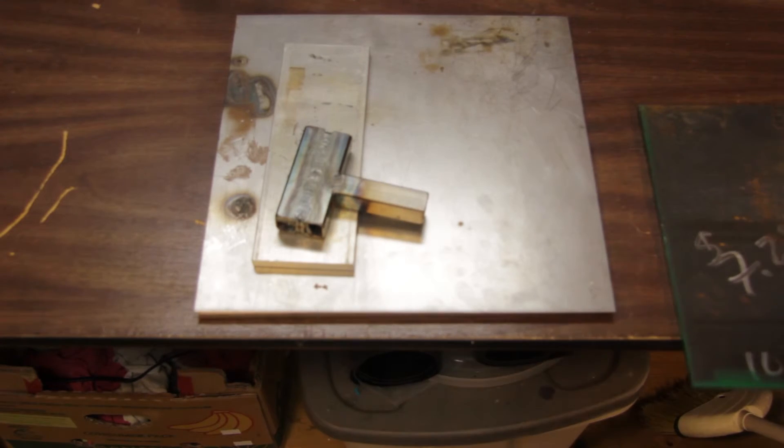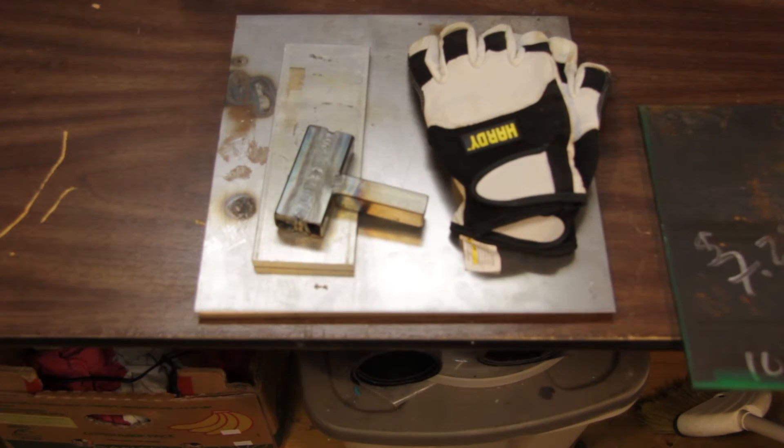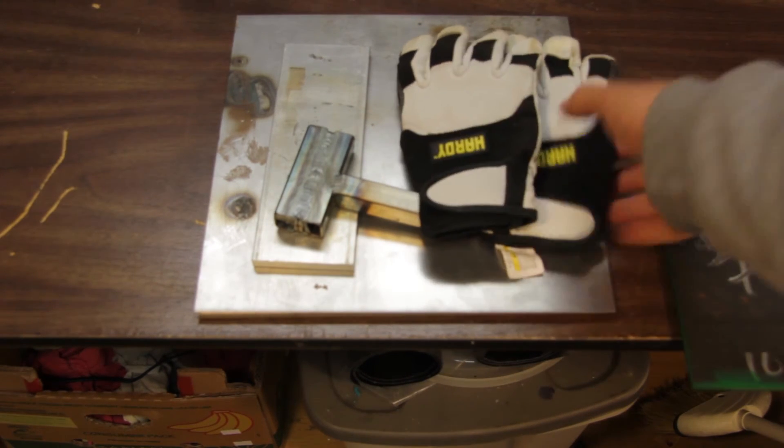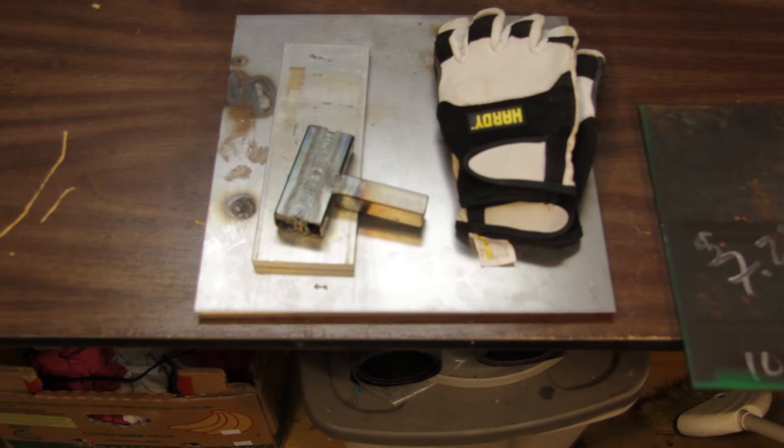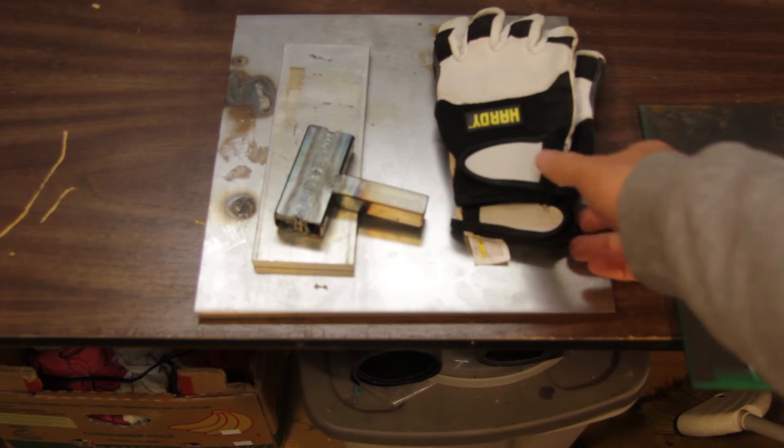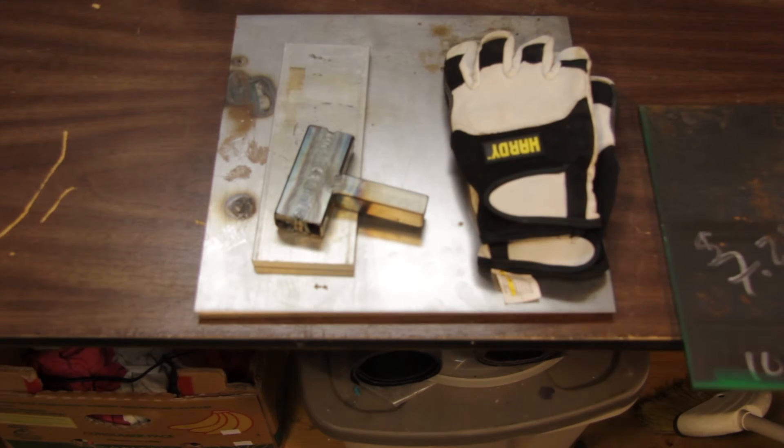Another thing that I do is when I TIG weld, I looked at the various welding gloves out there, anywhere from the Miller gloves to the Tillman to the Lincoln electric gloves, and they're all rather $12, $15, $16, $20 for a pair of gloves.